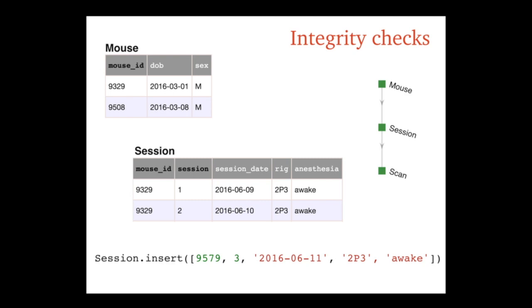Now we're inserting into session. Should this insert be okay? It's not because we don't have a mouse with that number. It forces you to enter all the information. How about this one? It's also not okay because we already have this mouse and session - that's a duplicate. These two fields together should not repeat. But this is okay, even though session is part of the primary key. Both have to be together unique, but separately they can repeat. So this is okay.